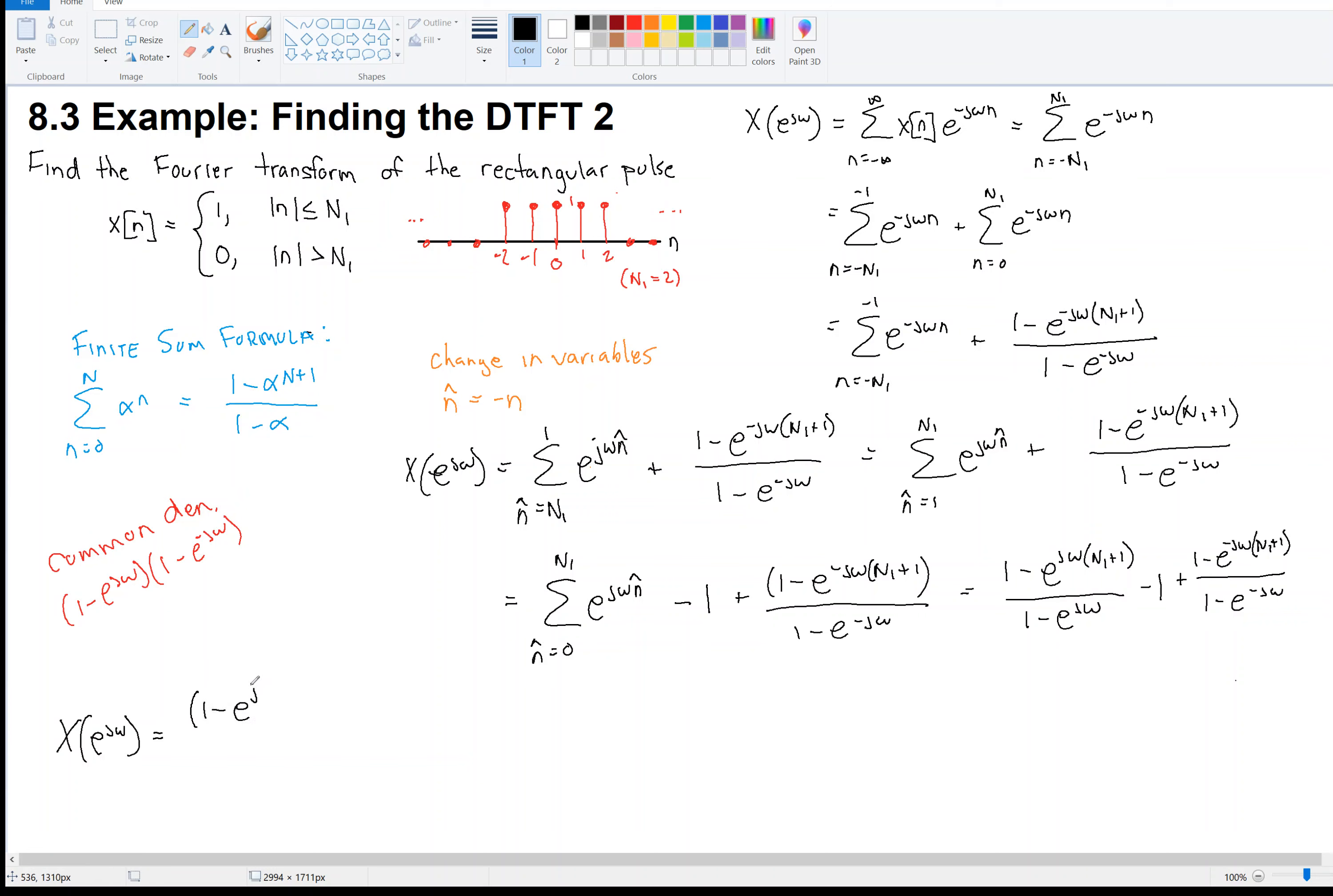So, we would multiply the first fraction by 1 minus e to the minus j omega. And then, the 1, we need both of those factors for the 1. And then, for the next and last term, we need to multiply by 1 minus e to the positive j omega. And then, we can put all of that over the common denominator, which is 1 minus e to the j omega times 1 minus e to the minus j omega.